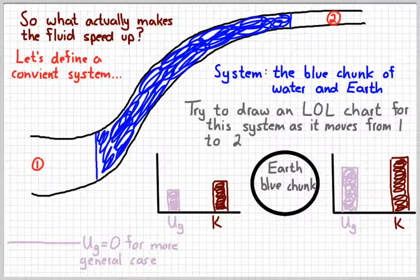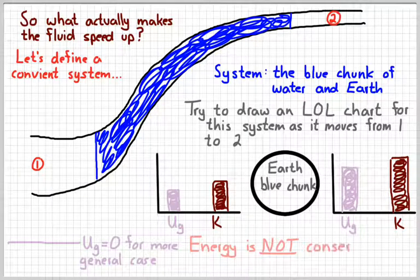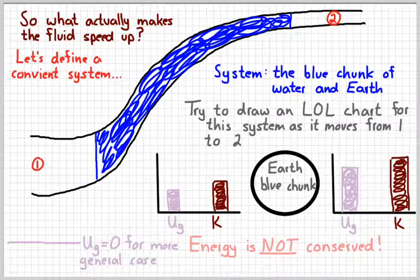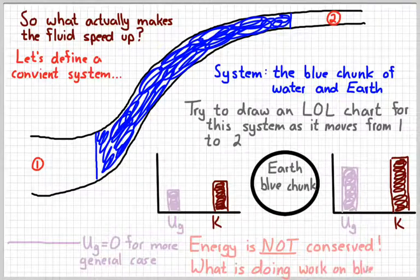So if you look at that and you study it for just a little bit, hopefully you're noticing that those energies aren't adding up. The potential energy went up and the kinetic energy went up as we move from point one to point two. In other words, energy is not being conserved in this situation. So the question might be, where is the energy coming from? What's doing work in order to make that blue chunk gain energy as it moves through the pipe?